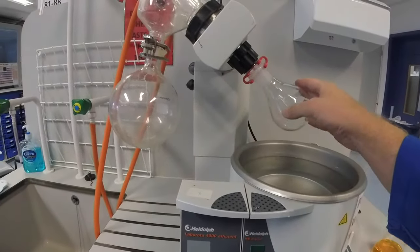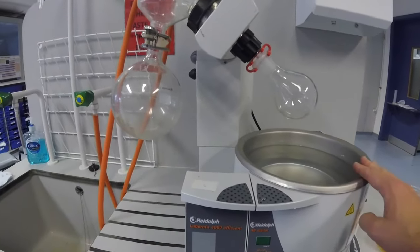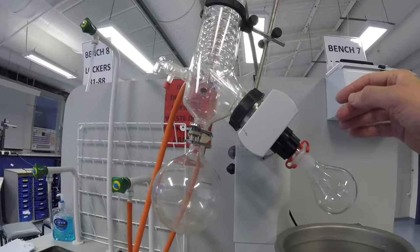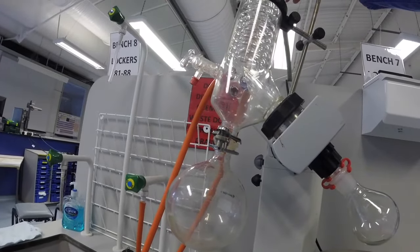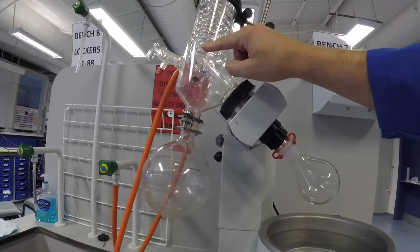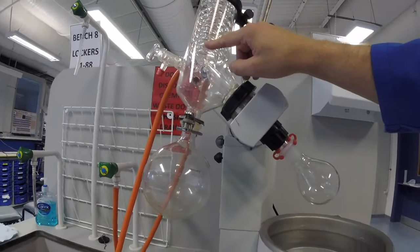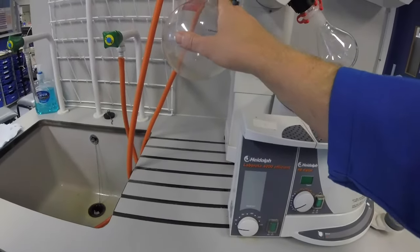So we have the flask here. We use a water bath to raise the temperature and then we have the vacuum over here. We have a condenser here to cool the solvent that's coming off which will then be collected in this trap here.